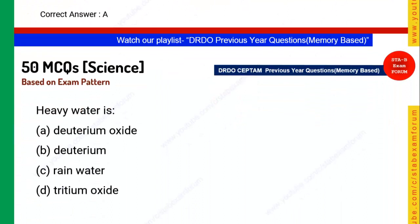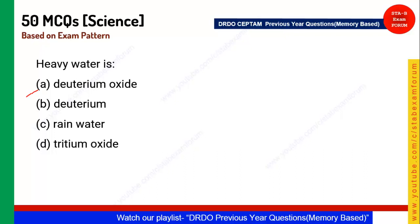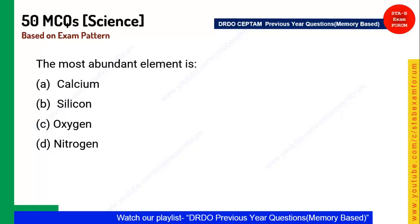Next question: Heavy water is used in nuclear reactors. What is heavy water? Heavy water is also known as deuterium oxide, D2O. Option A is the correct answer.